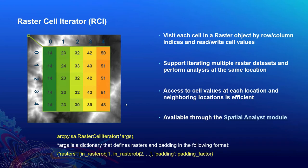RCI is available through the Spatial Analyst module, though you don't need the Spatial Analyst extension to use it. The basic signature of RCI takes a dictionary input with two parameters: first, a list of rasters to iterate through; and second, a padding factor that expands the internal pixel block size, which will be explained further. The padding parameter takes a dictionary input where you specify the rasters list and the padding value.